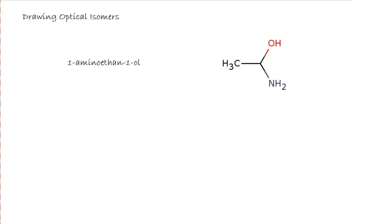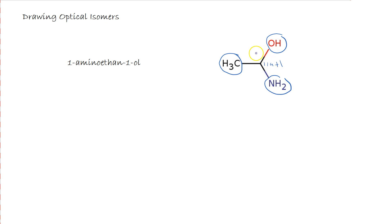Now let's have a look at how we would go about drawing our optical isomers. Here is an example: 1-amino-ethan-1-ol. We know this is optical because it has a chiral carbon — the central carbon in the middle has an OH group, an NH2 group, a CH3 group, and also a hydrogen (since that's a skeletal formula). So it's got four different groups, and our chiral carbon is this one here.